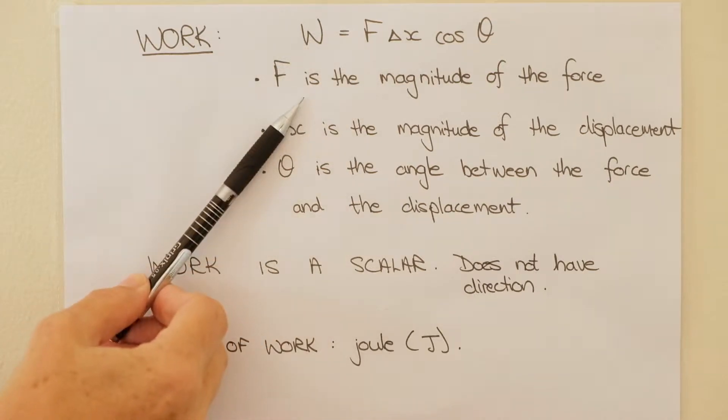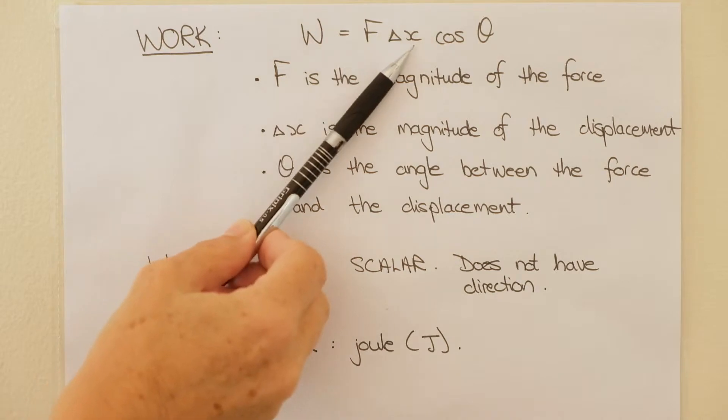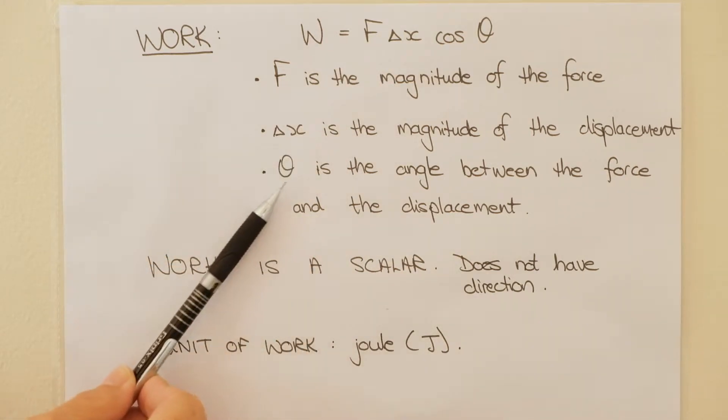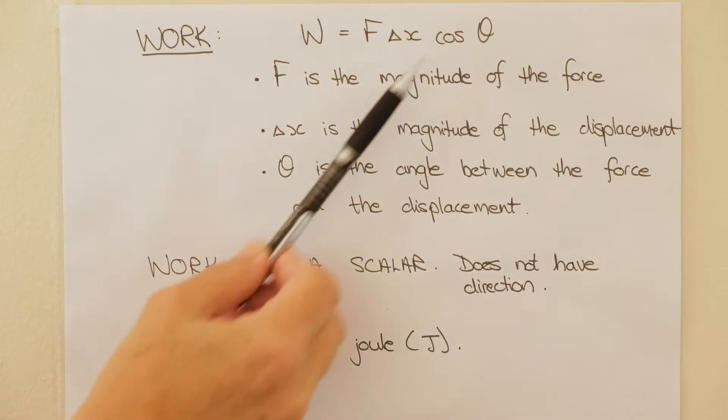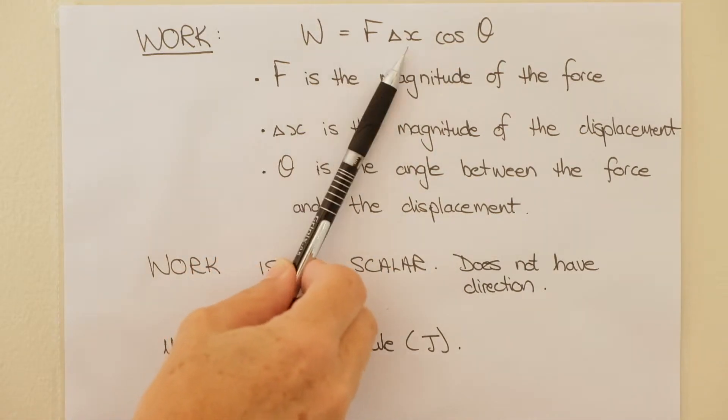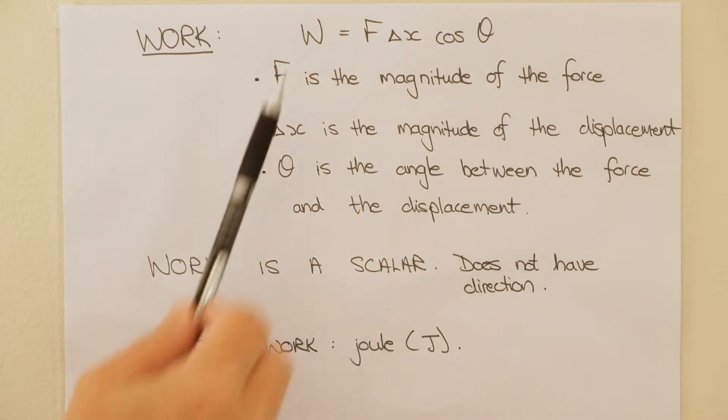W obviously stands for work. F is the magnitude of the force acting on an object. Delta x is the magnitude of the displacement of the object and theta is the angle between the force and the displacement. This is the angle between that force and that displacement.